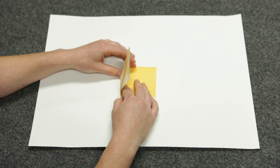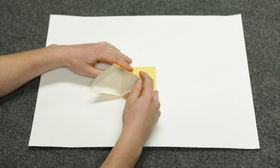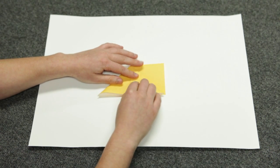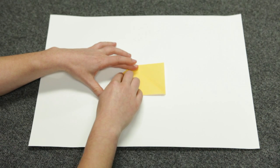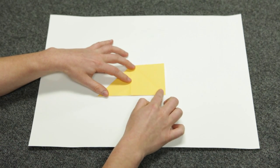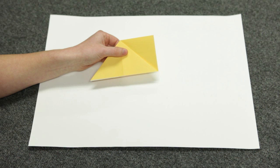Lift the side you just folded and press it down into a triangle along the crease you just made. Your paper should look like this.